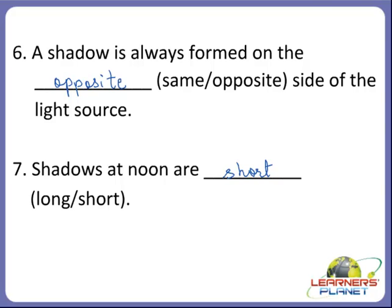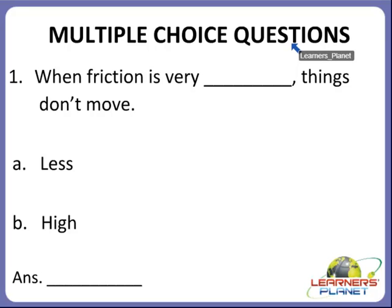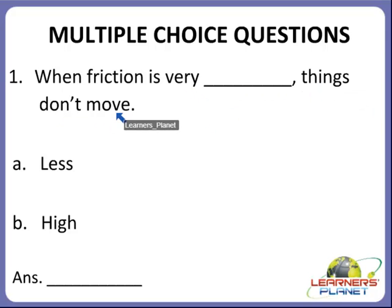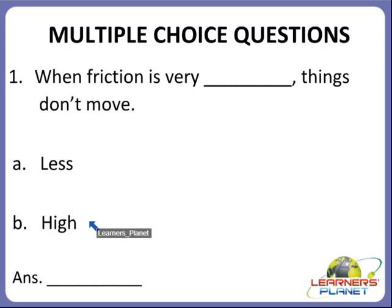I hope you are clear with this activity. Now we will move on to the next activity, that is multiple choice questions. When friction is very dash, things don't move. Is it A — less, or B — high? When friction is very less, things slide. But when friction is very high, things don't move. So the correct answer is B.